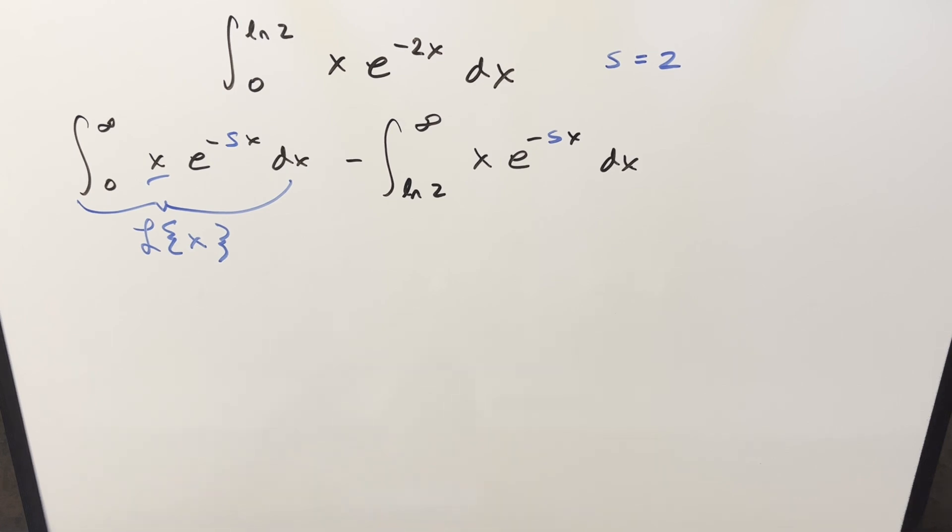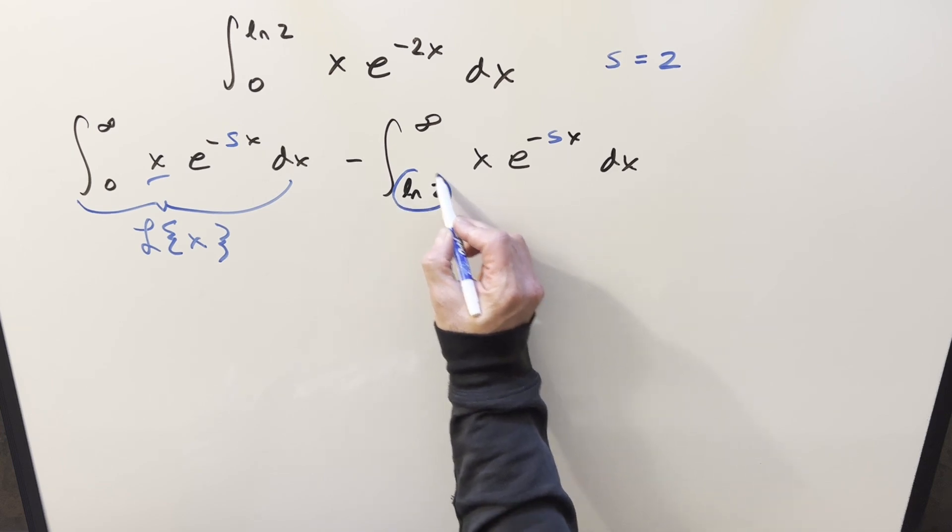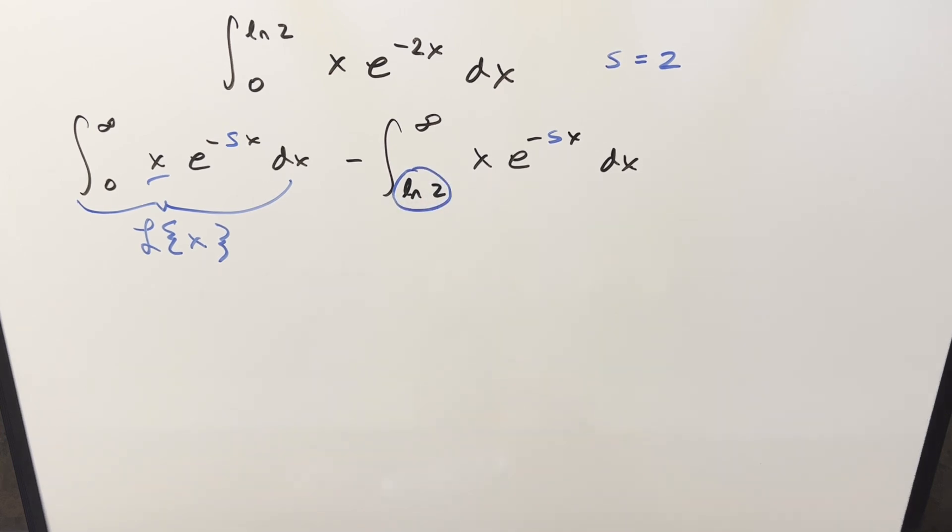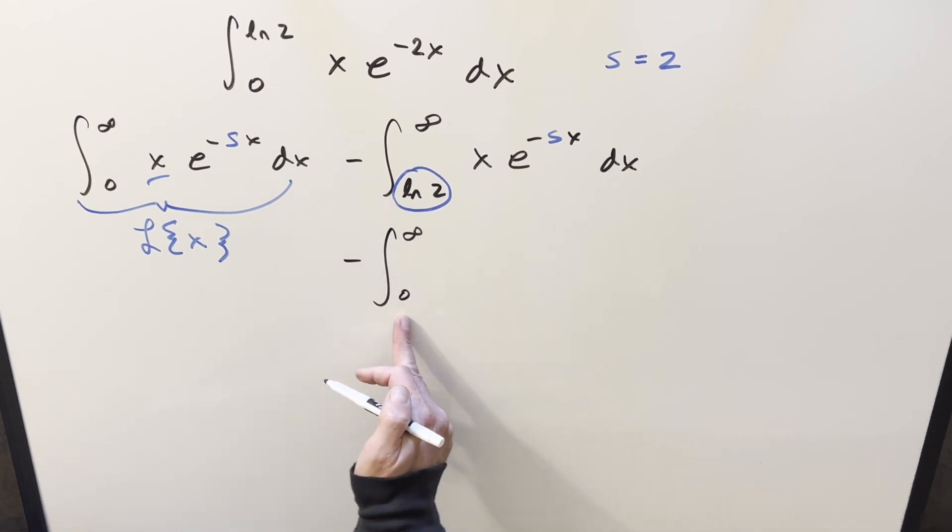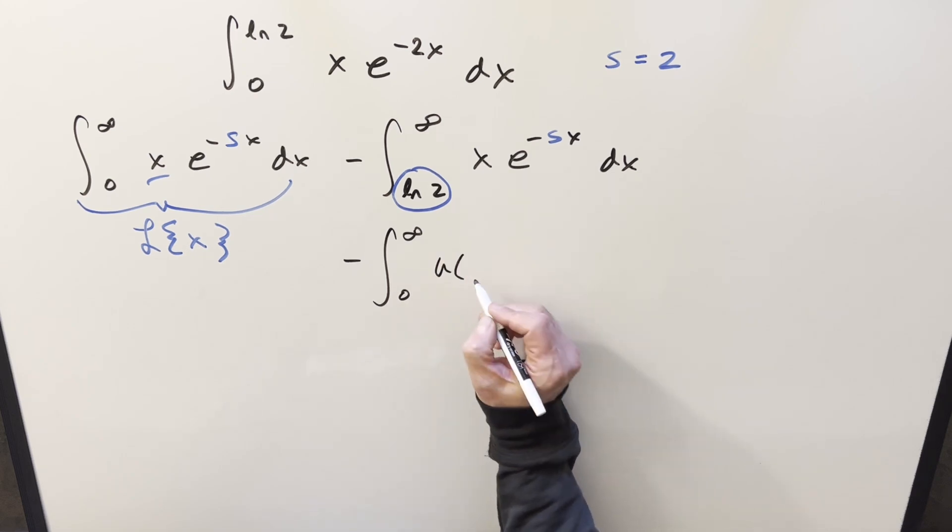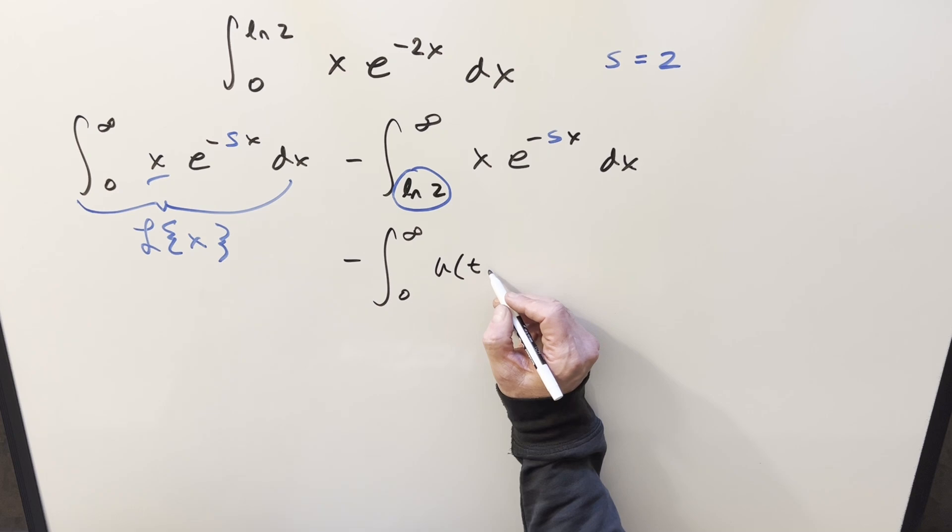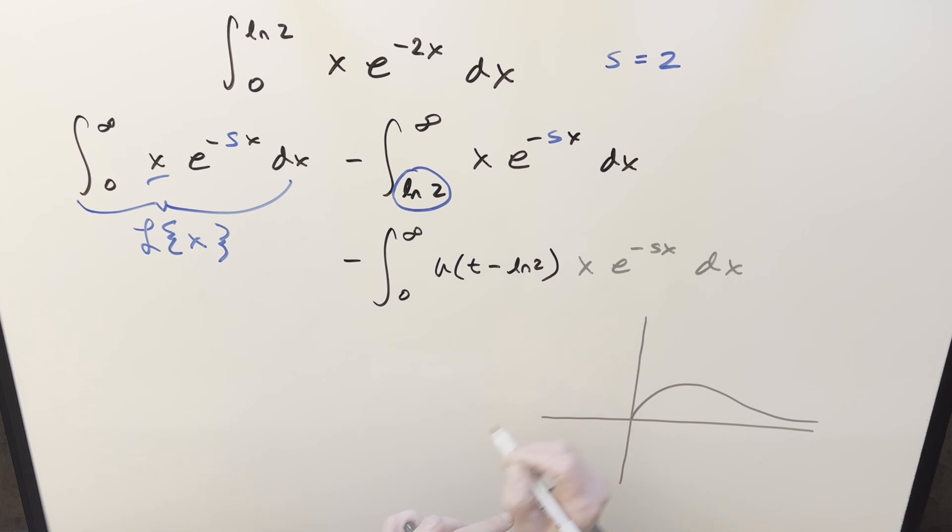ln 2 to infinity equals the whole thing from 0 to infinity. And again, on this one, I've replaced the 2 with an s, so we can try to use the Laplace transform on it. But now the problem on this second one is we're still not set up for the Laplace transform just because of this lower bound. We want this to be 0. Well, the trick you can use on this when you have a lower bound that's not 0 is we can kind of rewrite it, force it to happen, force the lower bound to 0, but then bring a unit step function into the integral where the unit step function is going to start at this point. So we're going to have the unit step function going from, so we're going to have our unit step function starting at ln 2.